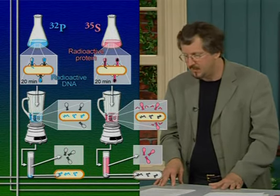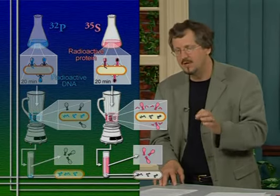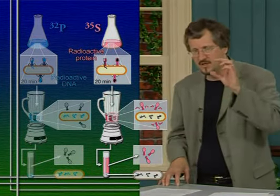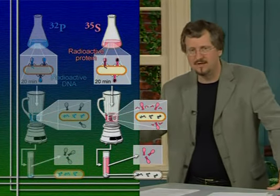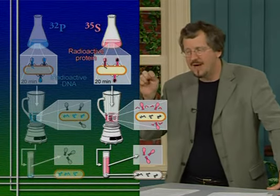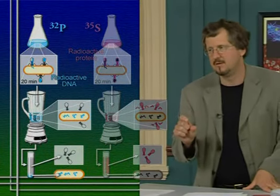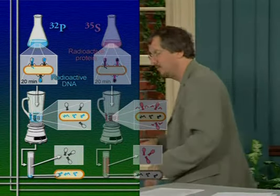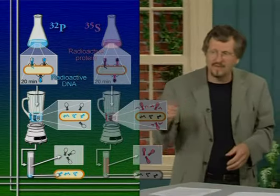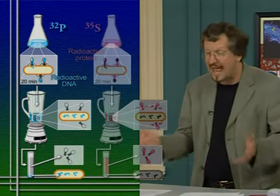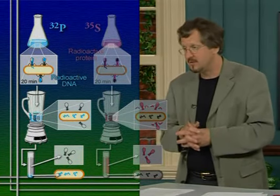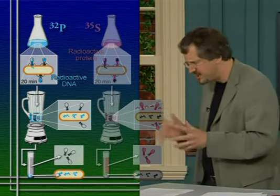They then asked where the radioactivity was — in the pellet with the bacteria, or in the supernatant with the viral coats? What they found was that if they radioactively labeled the sulfur marking the proteins, the radioactivity was found in the supernatant where the viral coats were. If they radioactively labeled the DNA with phosphorus, the radioactivity was found in the pellet where the bacteria were. This simple result took the world by storm, because it showed incontrovertibly that what these viruses were injecting into the bacteria — what had to be the genetic material — was nucleic acids, and specifically DNA. Hershey and Chase published these results in 1952, causing a whole bunch of biologists to say they better take a closer look at nucleic acids.